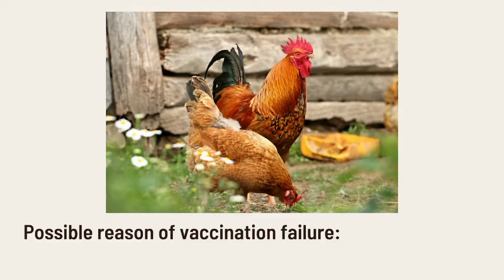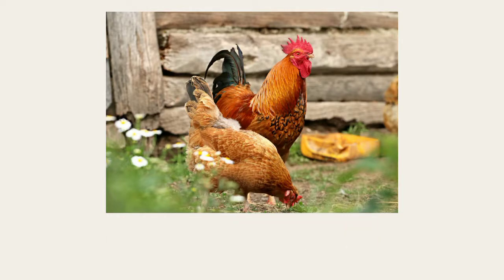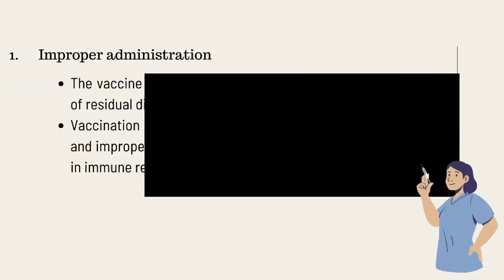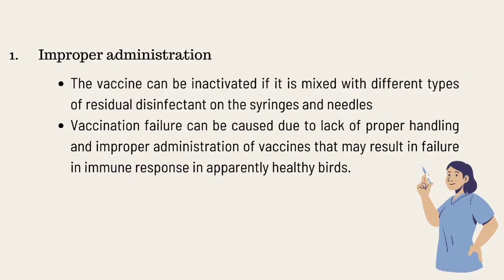Possible Reasons of Vaccination Failure. First, Improper Administration. The vaccine can be inactivated if it is mixed with a different type of residual disinfectant, such as chlorine, on the syringe and needles.